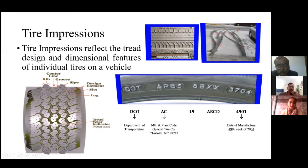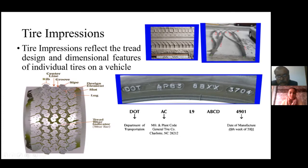The DOT code includes the date of manufacturing. For example, if you see '3704' it means the tire was manufactured in the 37th week of 2004. You can trace the batch number and reach the manufacturing slot details. So if there is a hit and run case and you find only a tire without a vehicle, these DOT codes can help you reach the vehicle by identifying the company, time of manufacturing, and the model for which that tire was manufactured.